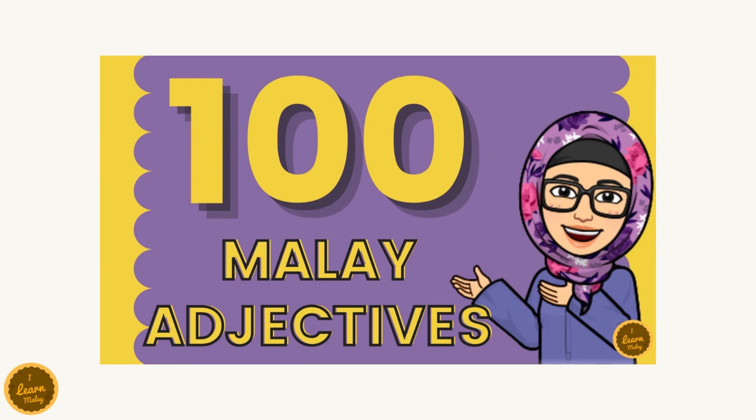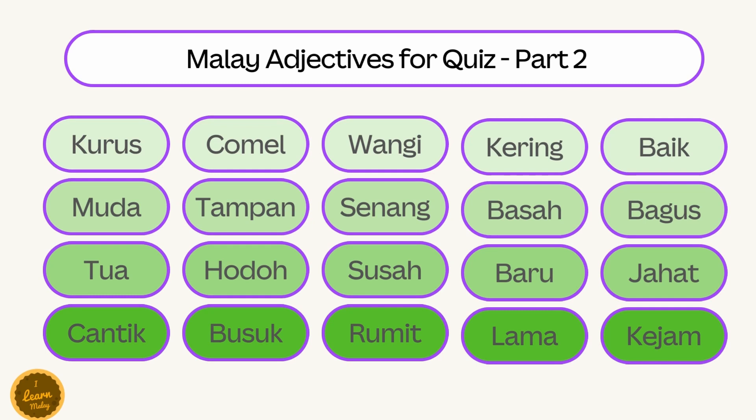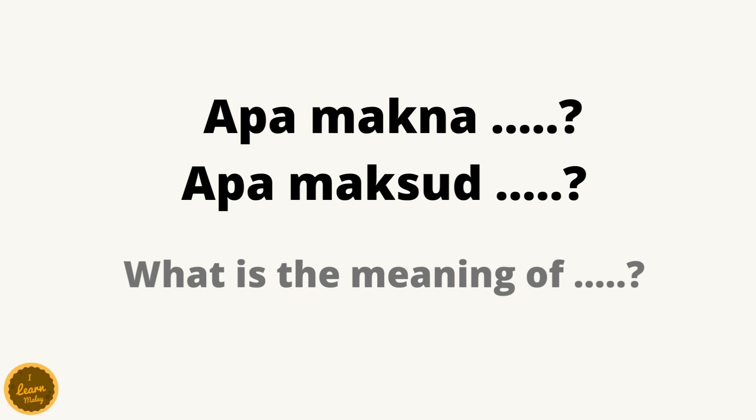As mentioned before in part 1, this part 2 will also quiz you on the meaning of Malay Adjectives in English. The quiz consists of the next 20 adjectives in the must-know Malay Adjectives list. Let's recap how we execute the quiz. In Malay, if you want to ask what is the meaning of a word, you say "Apa makna?" or "Apa maksud?" Apa means "what" in English, and makna or maksud means "meaning." So both phrases mean "what is the meaning of." I will be asking you "Apa makna?" followed by the corresponding Malay adjective, and you will be given around 5 seconds to choose the correct meaning in English.